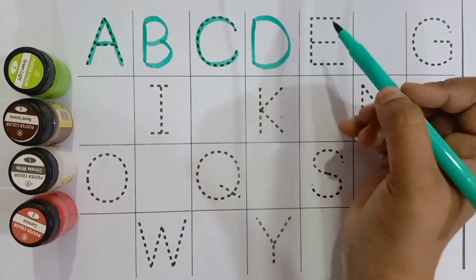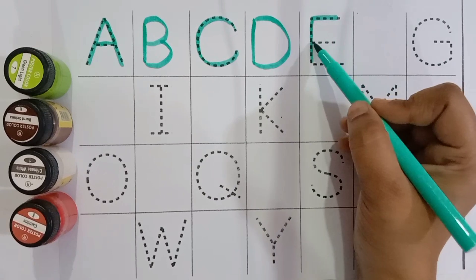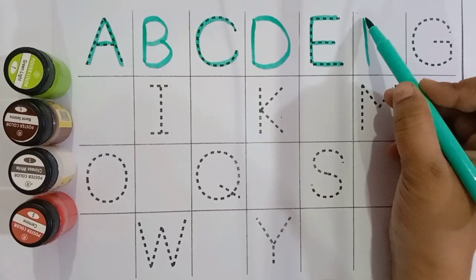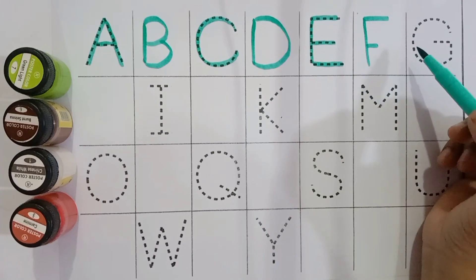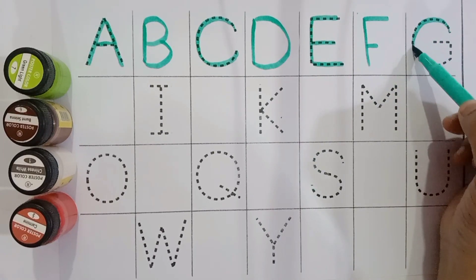D for duck. E. E for eagle. E for eagle. F. F for fish. F for fish.